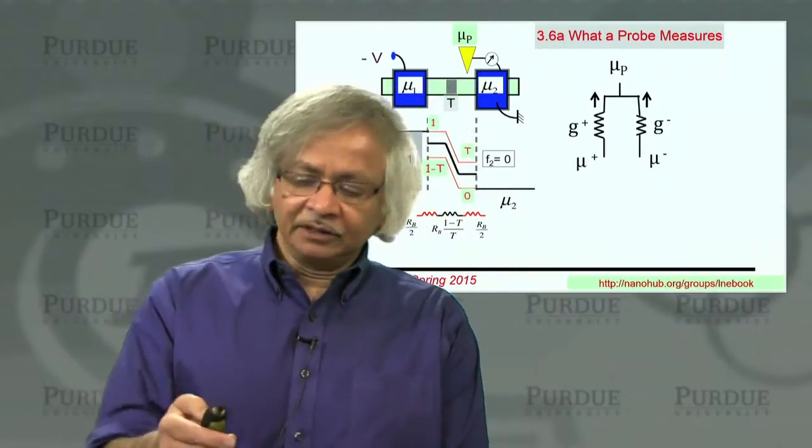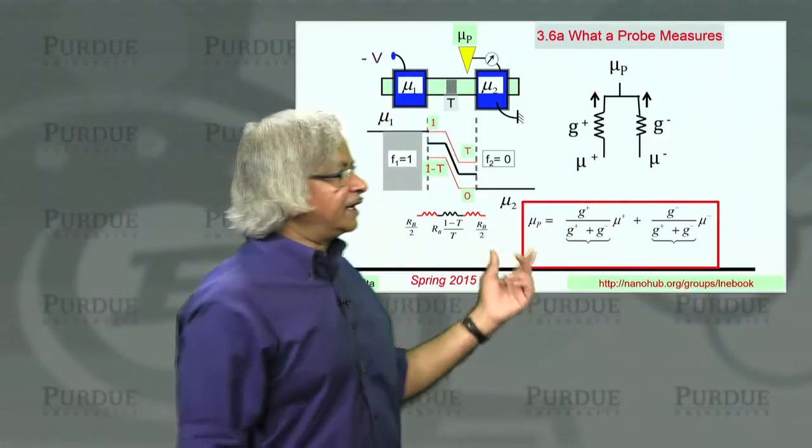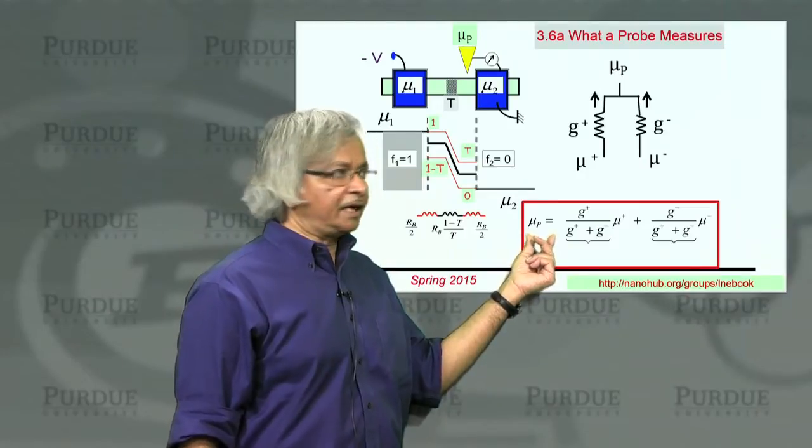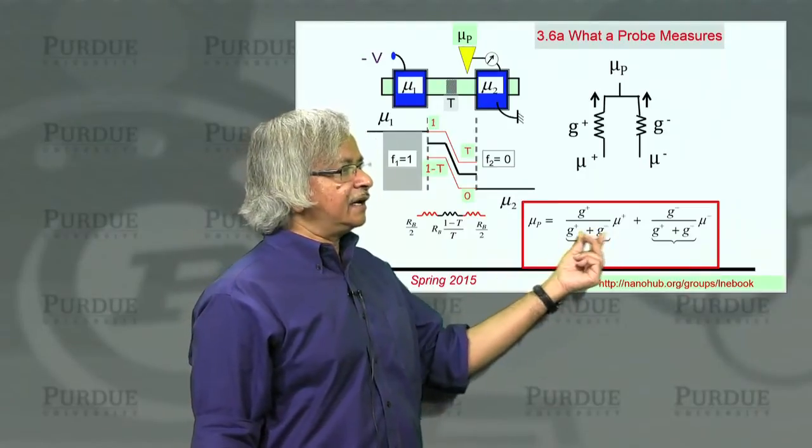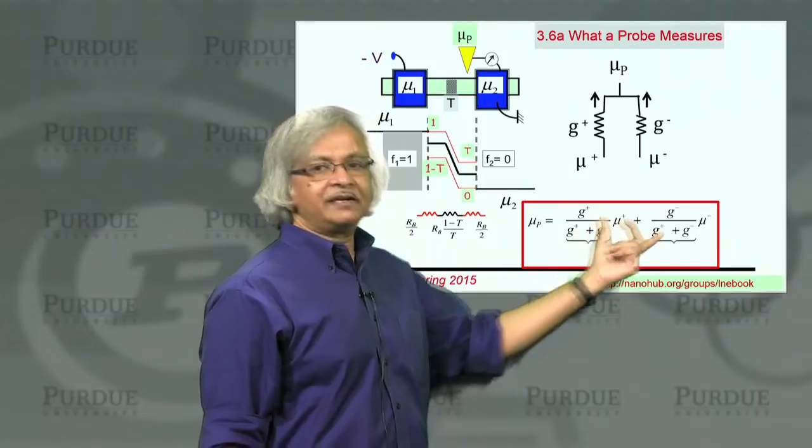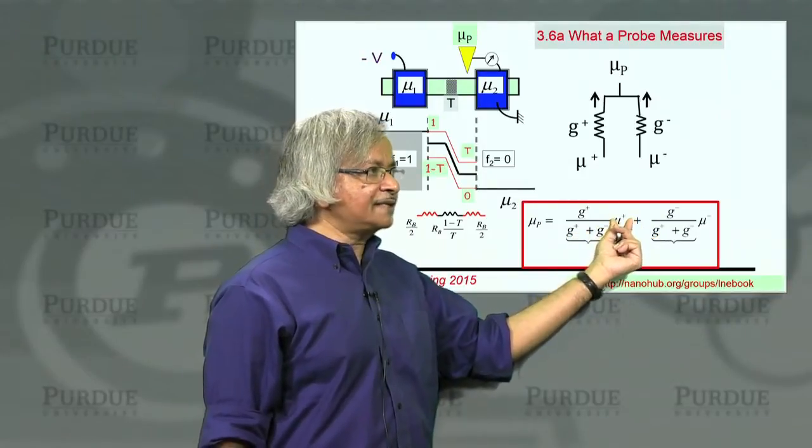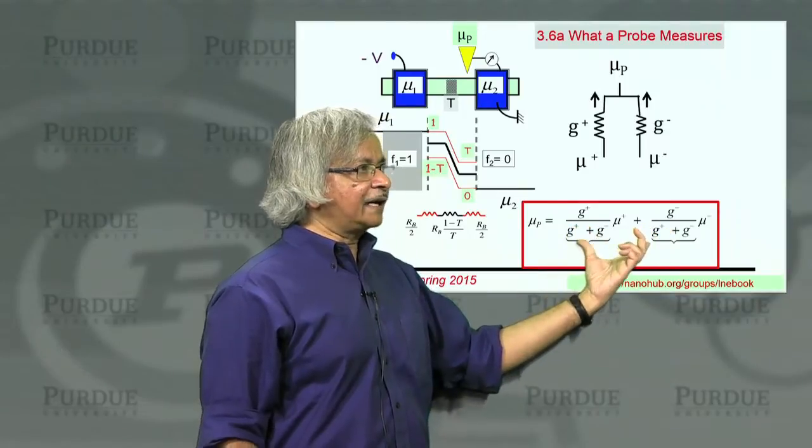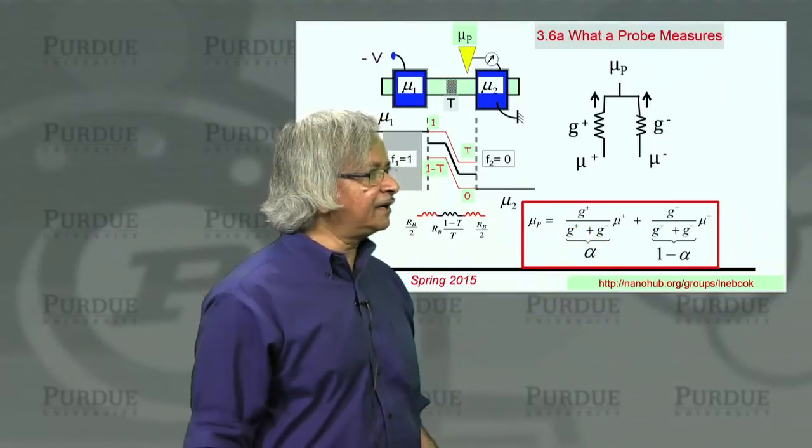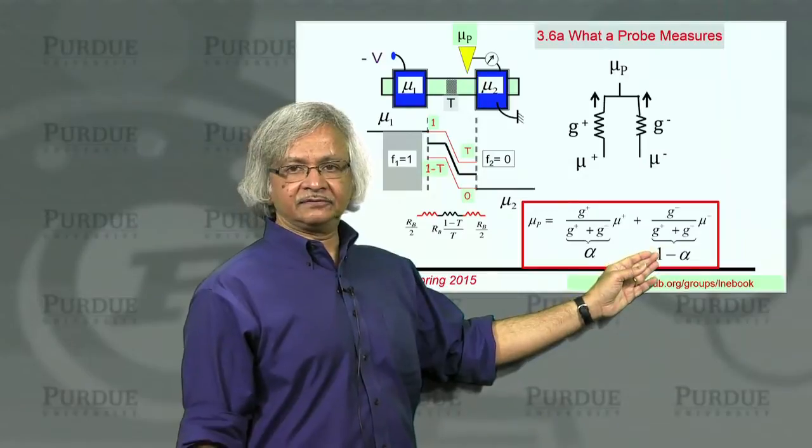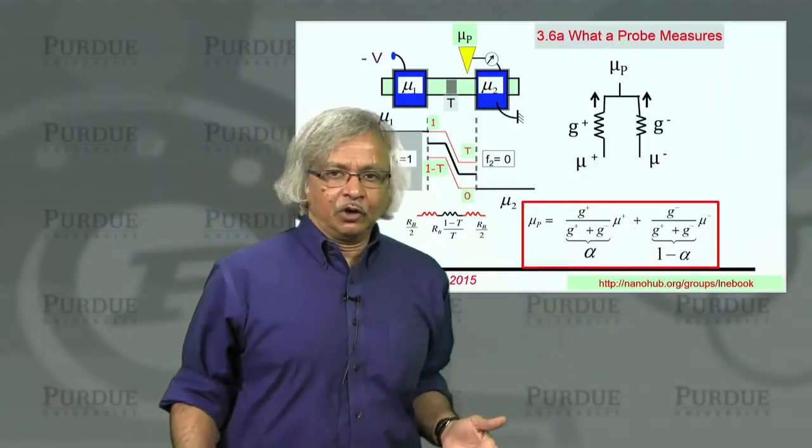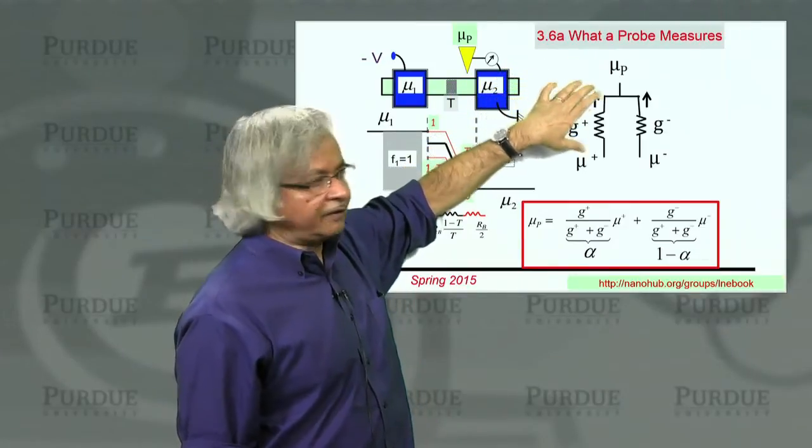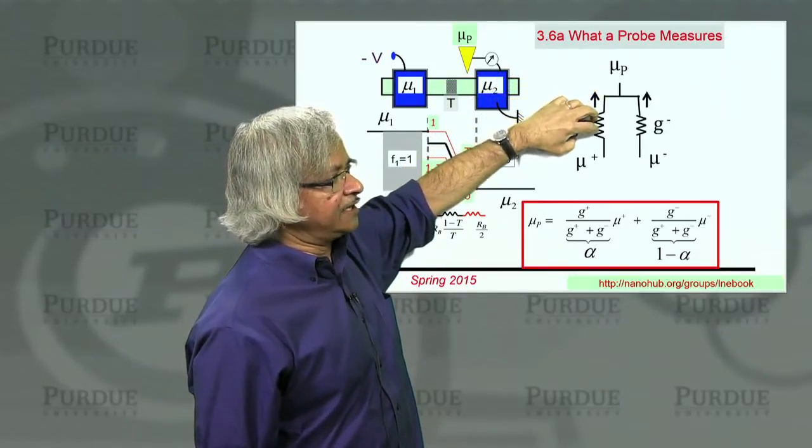And if you do that, then with a little algebra, you'd get an expression for what the probe potential must be. And it will come out as a weighted combination, a weighted average of mu plus and mu minus. So these factors in front, they add up to one. So if one of them is alpha, the other is 1 minus alpha.